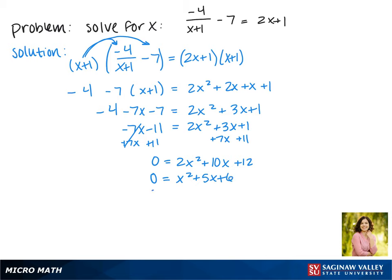Now the factors of 6 that will make 5 are positive 3 and positive 2, so we have x plus 3 and x plus 2.